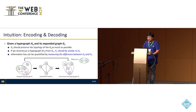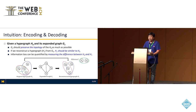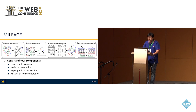We are going to quantify the information loss in this paper. Our idea is based on encoding and decoding: given a hypergraph H0 and its expanded graph G1, G1 should preserve the topology of H0 as much as possible. If we reconstruct H1 based on G1, then H1 should be similar to H0. The difference between H1 and H0 primarily stems from information loss, meaning we can measure it by comparing H0 and H1. Based on this idea, we propose MILEAGE, which quantifies the information loss of the hypergraph expansion method. It consists of four components: hypergraph expansion, node representation, hypergraph reconstruction, and the mileage score, which is the information loss computation.